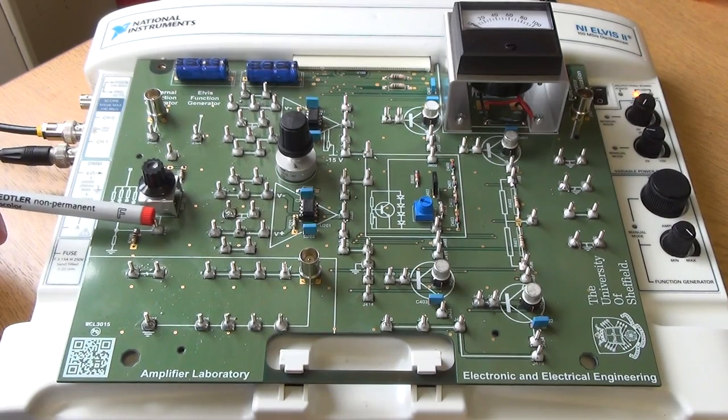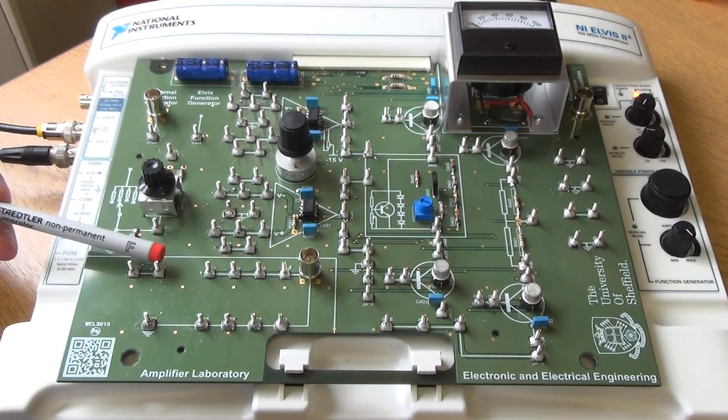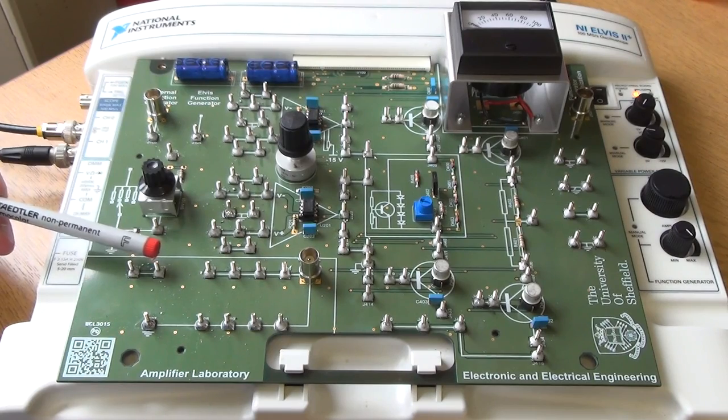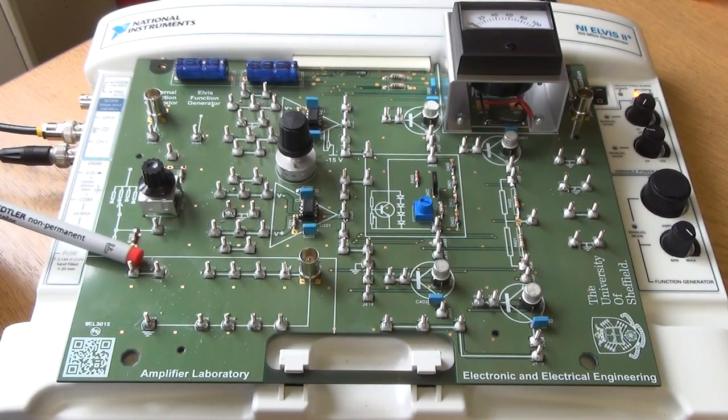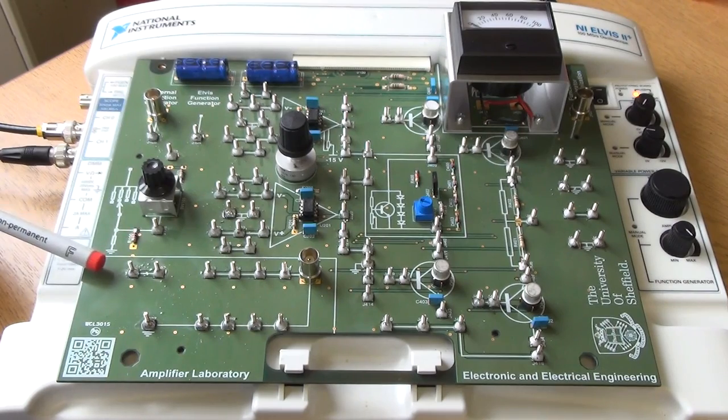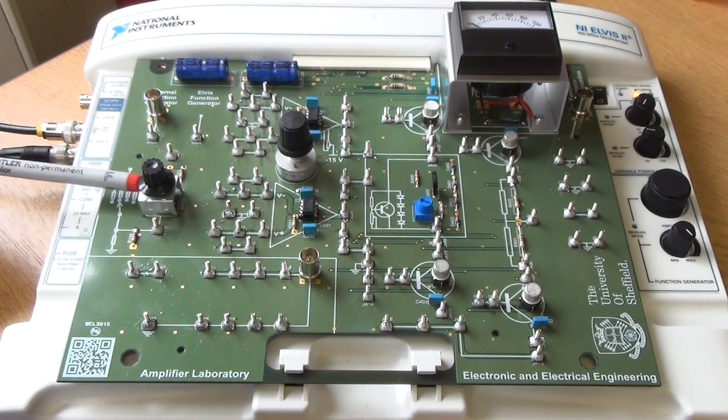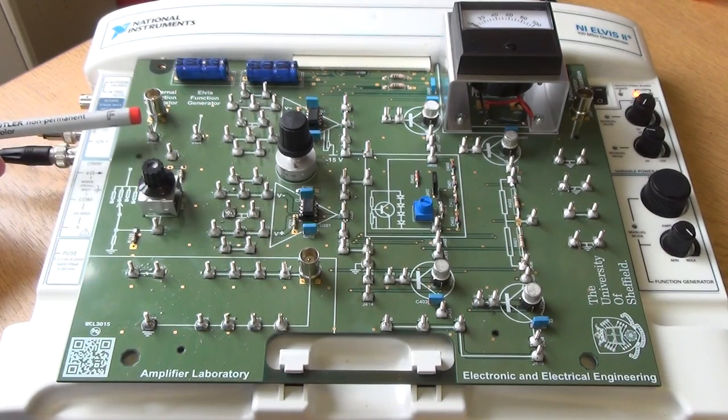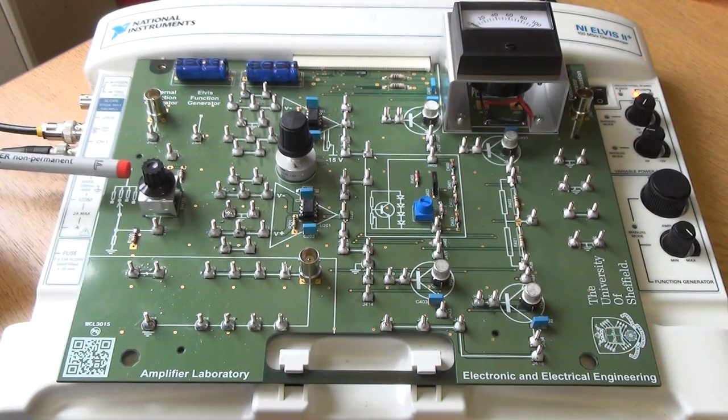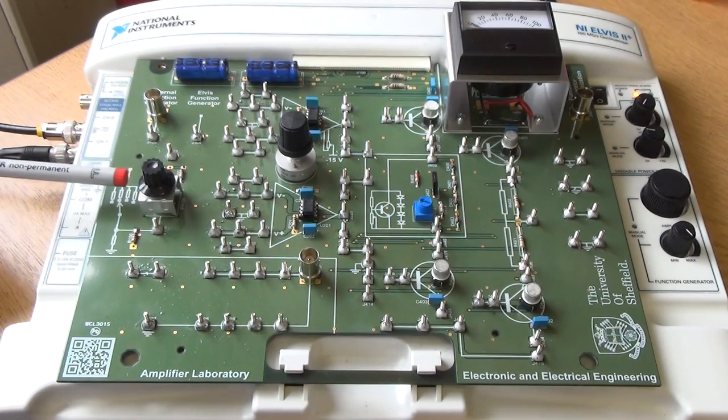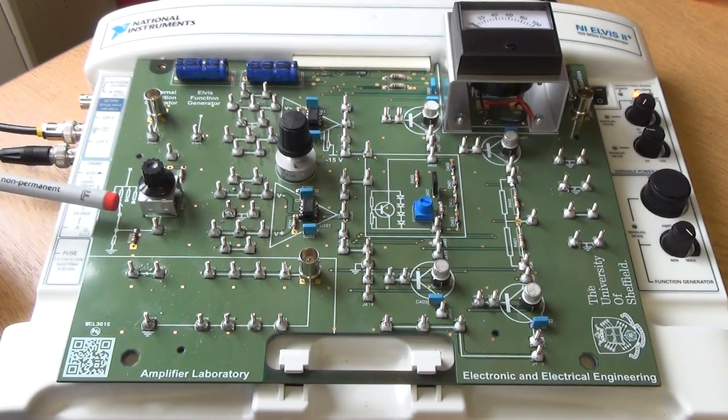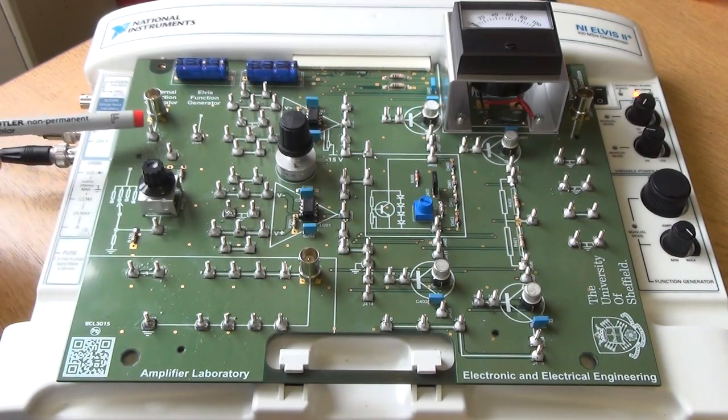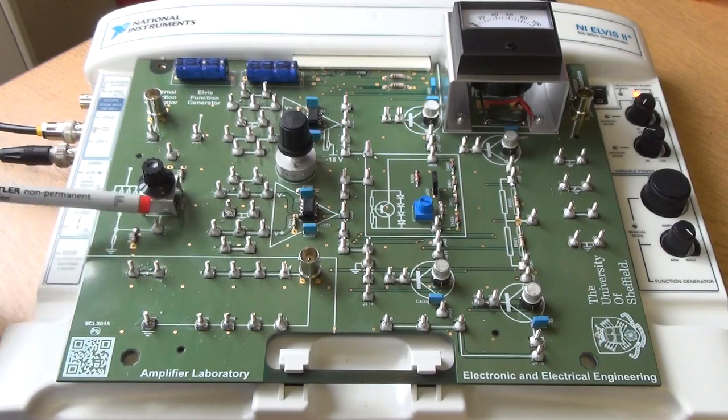And you will solder it on day one to probably this pin or this pin, and these two are connected together. You can tell they're connected together because of the white line between them. The point of the stepped attenuator is to allow you to make the input from the external function generator smaller than you otherwise would be able to. It's a good idea to get in the habit of using it because you'll need it on day two and day three.